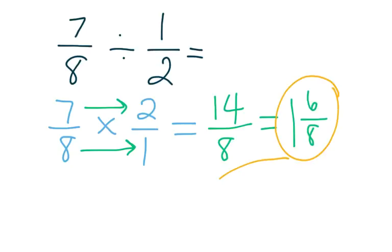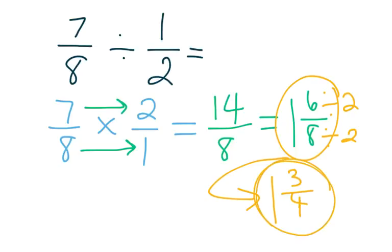This is not in simplest form though, because I can still divide by 2 and get a final answer of 1 and 3 fourths. So my final answer would be 1 and 3 fourths in simplest form.